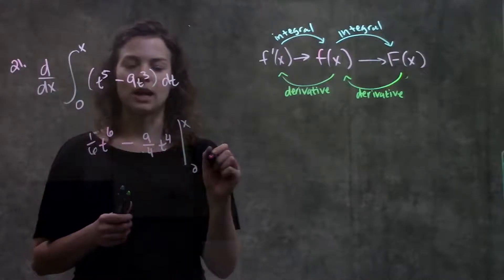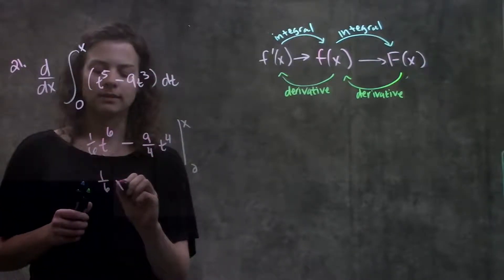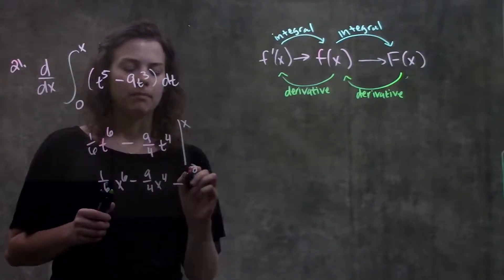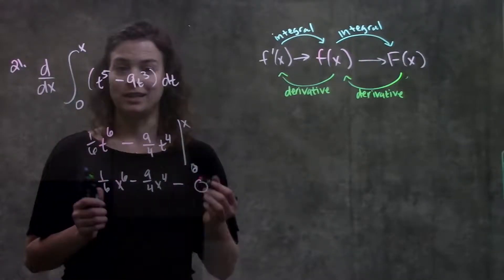Now we just plug in our top number, subtract whatever we get when we plug in our bottom number. This becomes 1 sixth x to the sixth minus 9 over 4 x to the fourth minus, when I plug in 0 here, I'll get 0 minus 0, which is just 0.